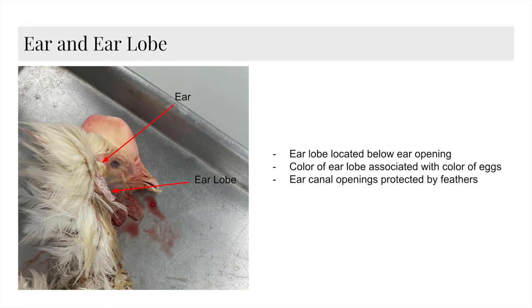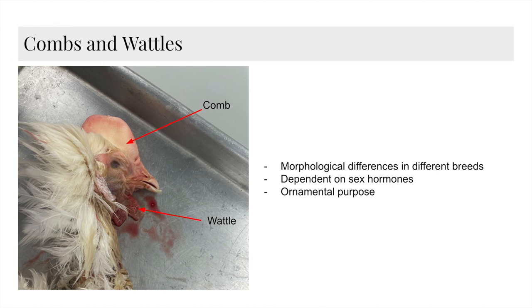Beginning at the ear lobe, we can see specialized skin located below the opening of the ear. This is the opening into the ear canal which is protected by feathers. The color of the ear lobe is also correlated with the color of eggs laid by the chicken. Next are the combs and wattles of the chicken which vary in different breeds.